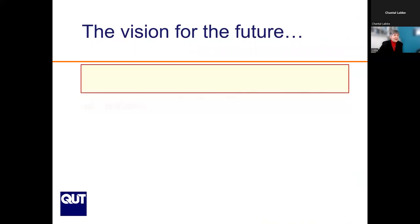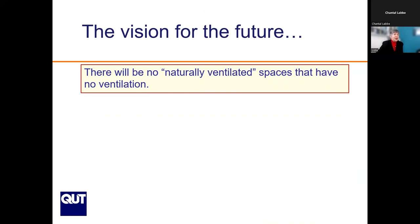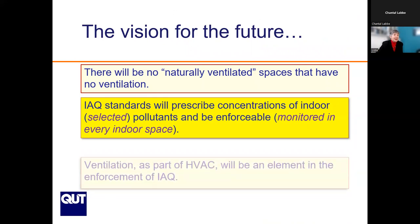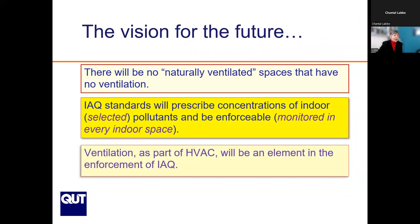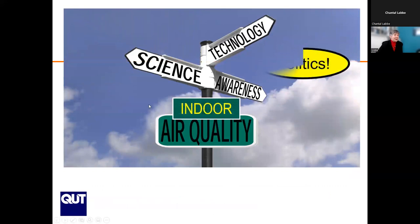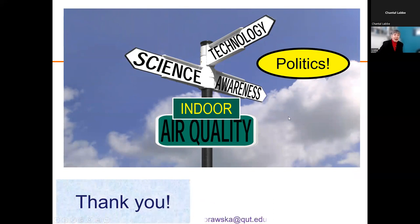The vision for the future: there will be no naturally ventilated schools with no ventilation. Indoor air standards will prescribe concentrations of selected pollutants and be enforceable, requiring monitoring of every indoor space — Australia currently has no indoor air standards. Ventilation as part of HVAC systems will be an element in enforcement of indoor air quality standards. Finally, ventilation in shared spaces will be supplemented by germicidal UV to control airborne infection risk, which is of particular importance in educational environments. This is complex — science, technology, and awareness all mixed with politics — but we can do much better.